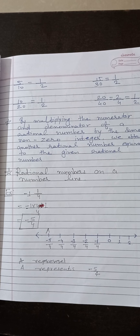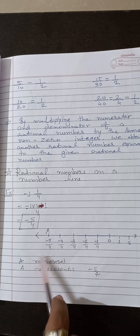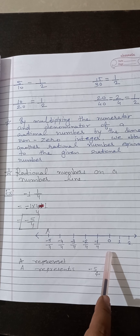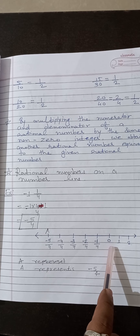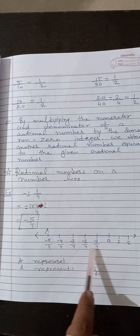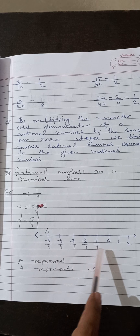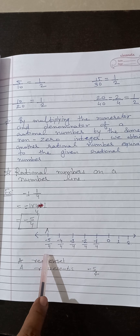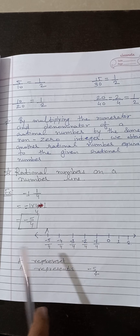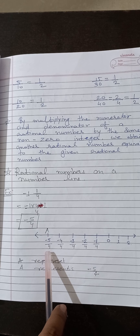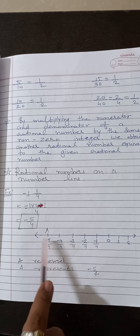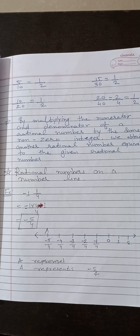Okay, then students, here we can draw the number line and represent minus 1 by 4 on it. This is your answer. In this manner, we could represent any rational number on the number line.